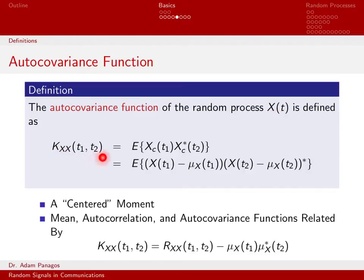In general, the autocovariance function is a two-dimensional time function. We have to provide times t1 and t2. It equals the expected value of Xc at time t1 times Xc at time t2. This subscript c notation means take the original random process X(t) at this time and subtract off the mean at this time.